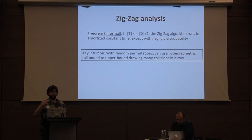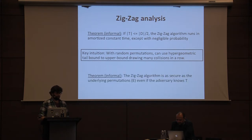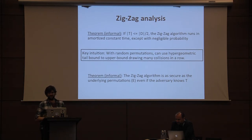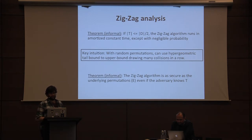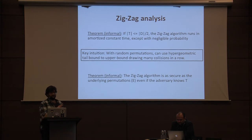Once you view the problem that way, you can use a standard tail bound on the hypergeometric distribution to bound the probability of going through the loop many times. The zigzag in the domain completion setting meets the strong pseudorandom permutation security goal, proved via reduction to the underlying permutations E and F. This reduction is tight — there is no loss in security.